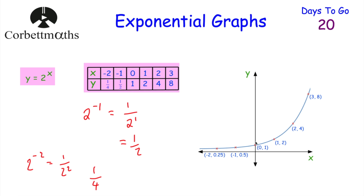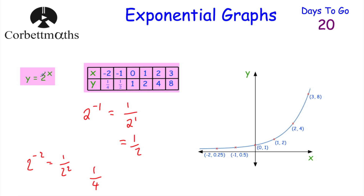The exponential graph gets very big very quickly - going to 4 at x=2, 8 at x=3, 16 at x=4, 32 at x=5 and so on. On the left-hand side, it approaches the x-axis but never reaches it. If the base is bigger than 1, it has this upward shape. If it equals 1, it's a horizontal line through 0,1. If it's a decimal between 0 and 1, the graph comes down the other way - still approaching the x-axis as an asymptote.